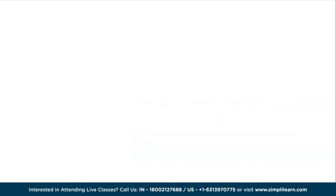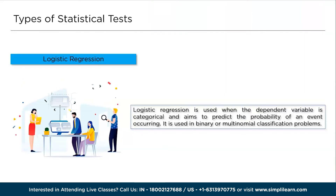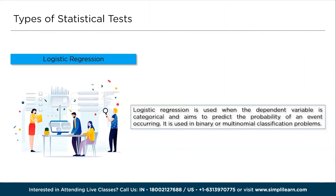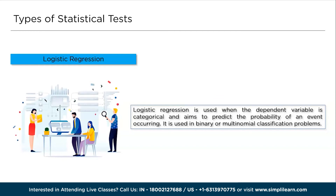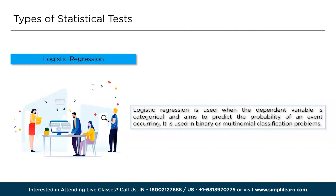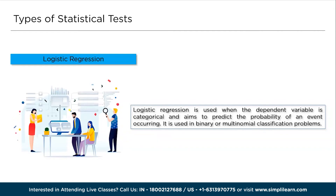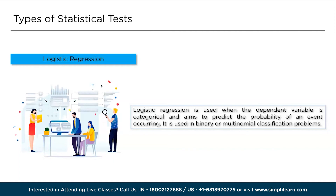Moving ahead, we have logistic regression. Logistic regression is a statistical model that predicts binary or categorical outcomes based on one or more independent variables. It estimates the probability of an event occurring by fitting a logistic function to the data. Unlike linear regression, logistic regression transforms a linear combination of predictors into a probability, and calculates the odds ratio to measure the impact of each independent variable on the outcome.